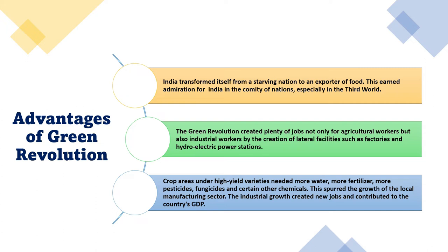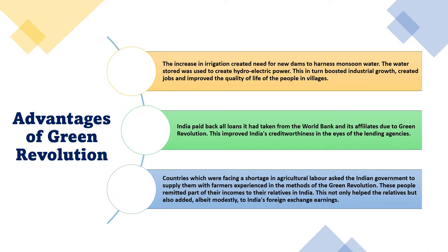This industrial growth created new jobs and contributed to the country's GDP. The increase in irrigation created new demand for dams harnessing monsoon water. The water stored was used to create hydroelectric power, which in turn boosted industrial growth, created jobs, and improved the quality of life, particularly in rural areas. India paid back all loans it had taken from the World Bank and its affiliates, which improved India's credit worthiness in the eyes of lending agencies.